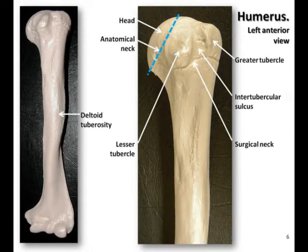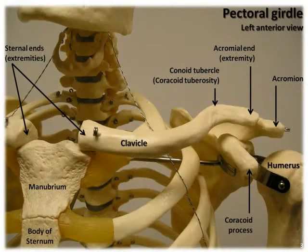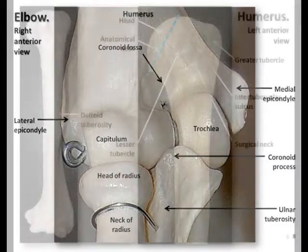The humerus is the upper arm bone in the brachial region, and it's the largest and longest bone of the arm. It articulates with the scapula on its proximal end, and with the radius and ulna on its distal end to form the elbow joint.